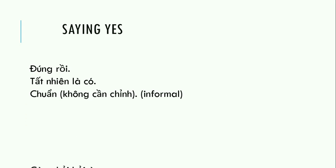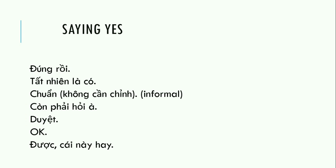Now let's learn something new. To say yes, we have phrases like 'đúng rồi' — correct. And 'tất nhiên là có' — definitely yes. 'Tất nhiên' means 'of course' or 'certainly.' Then there's 'chuẩn' — I'd say this one is quite informal, so be careful. Use it with friends, not with your boss or grandparents. It means 'that's perfect, you don't need to adjust anything.'